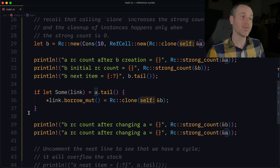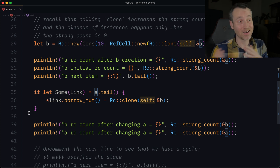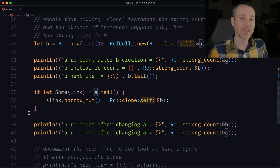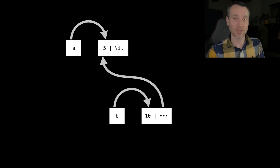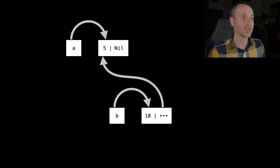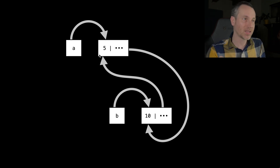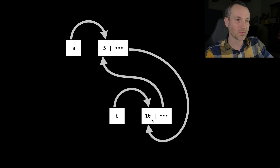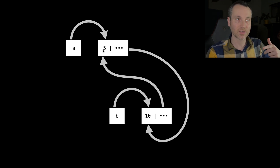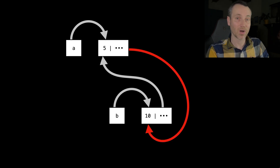On line 35, we're going to get the tail of A, mutate it, and give it B. So we had B pointing to 10 then to 5, which is also what A points to. But now we've mutated the tail of A so that it points back to B. B has 10, which then points to 5, which A also points to. This is a cycle — we're going in a circle. I've highlighted in red where that cycle got created.